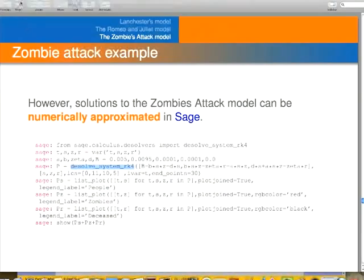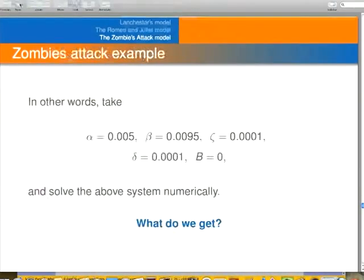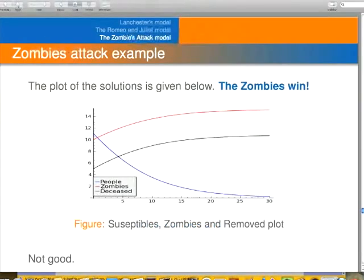Let me show them all on the same graph. I'm just remembering here for you what alpha and beta, and there's no birth rate here. So what do we get with these constants? Here we are. You see, the red is the zombies.